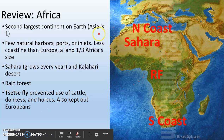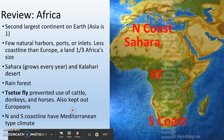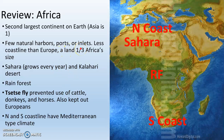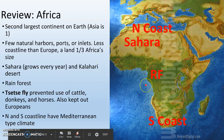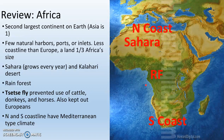Africa is the second largest continent on Earth — Asia is the biggest. What you need to know about Africa is that there are few natural harbors, ports, or inlets. There's actually less good coastline than Europe, a land which is a third of Africa's size. So even though this place is huge and surrounded by water, there's really not a whole lot of coast to make ports and stuff.